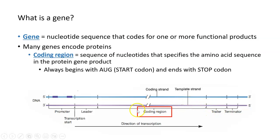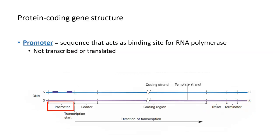On either side of the coding region — whether upstream or before it, or downstream after it — there are several other sequences as well. If we focus on the upstream portion of a protein coding gene, the portion before the coding region, we first come to the promoter of the gene.